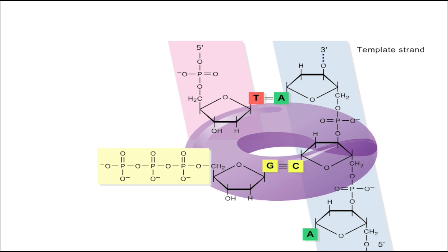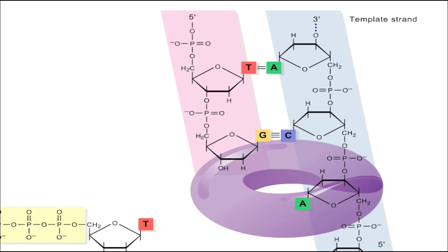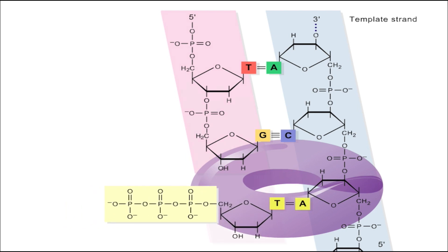The DNA polymerase then catalyzes the formation of a phosphodiester bond between the three-prime end of the new strand and the five-prime phosphate of the precursor base. The formation of the bond results in the release of two phosphates from the precursor. This process is repeated as the DNA polymerase moves down the template in the three-prime to five-prime direction.